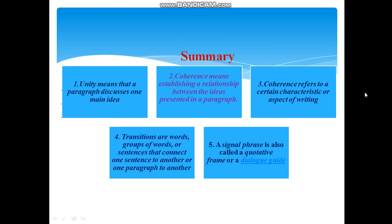Summing up for the lecture, we may say that: first, unity means that a paragraph discusses one main idea. Second, coherence means establishing a relation between the ideas presented in a paragraph. Three, coherence refers to a certain characteristic or aspect of writing. Four, transitions are words, groups of words or sentences that connect one sentence to another or one paragraph to another. And a signal phrase is also called a quotative frame or dialogue guide.